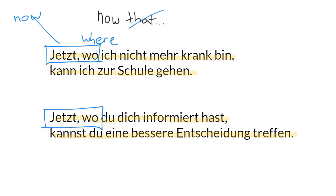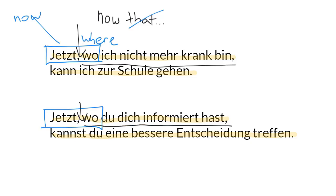Another thing to notice is that there is a comma. Don't forget the comma — even though you don't notice it in spoken German, it's important. The reason it's important is because the rest of the clause, which is started by a question word, has the verb at the end. These clauses start with a question word in a non-question — that question word is, of course, wo.